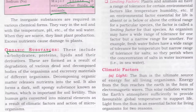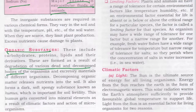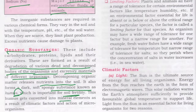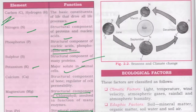Next come organic substances. These substances include carbohydrates, proteins, lipids, and their derivatives. Organic substances are formed as a result of degradation of dead and decomposed bodies of living organisms and their excretory materials. The decomposing organic matter releases nutrients into the soil, forming a dark, soft, spongy substance known as humus. This humus is very important for soil fertility and gets converted into mineral elements through climatic factors and the action of microorganisms.